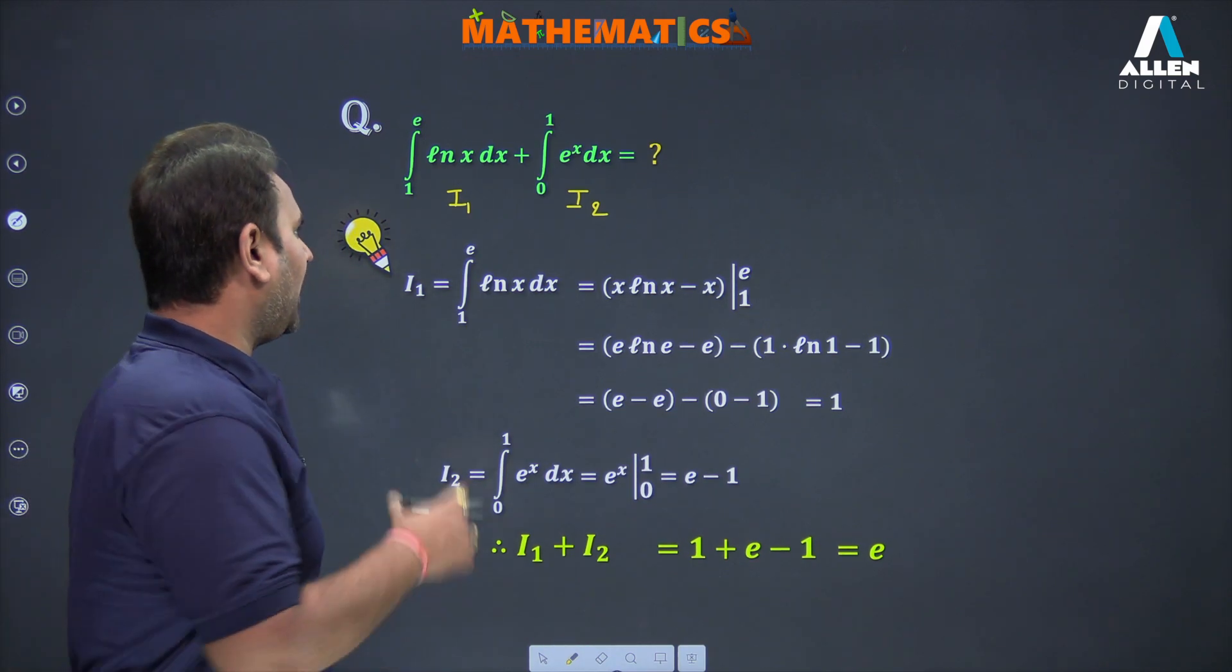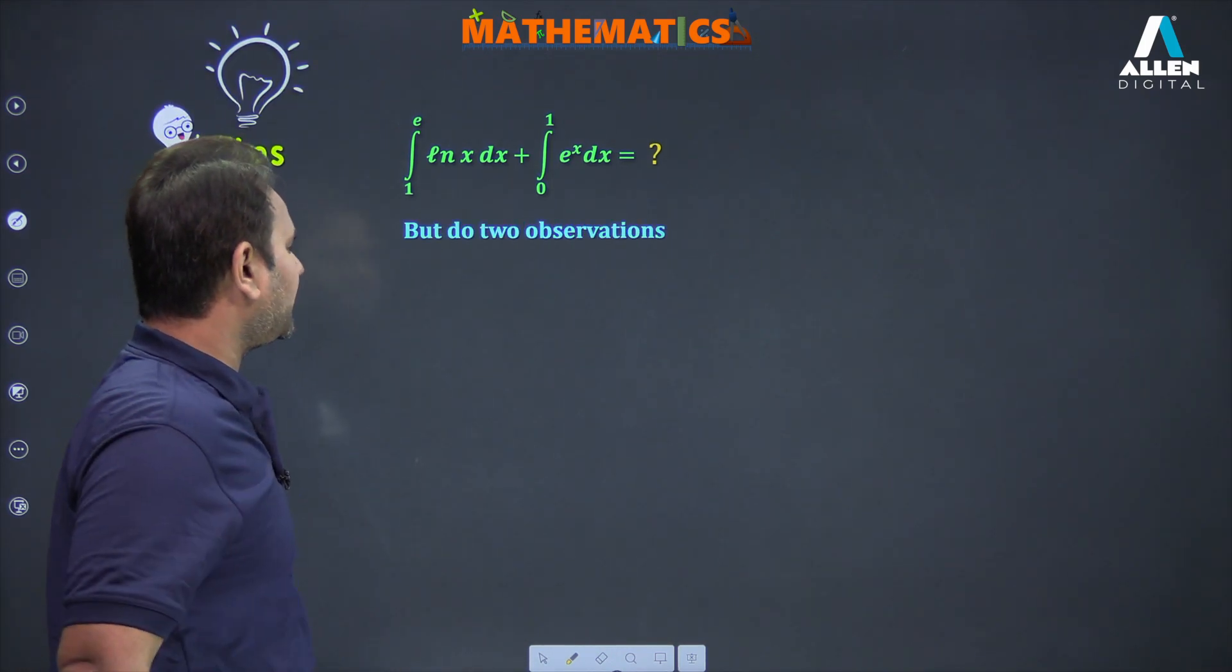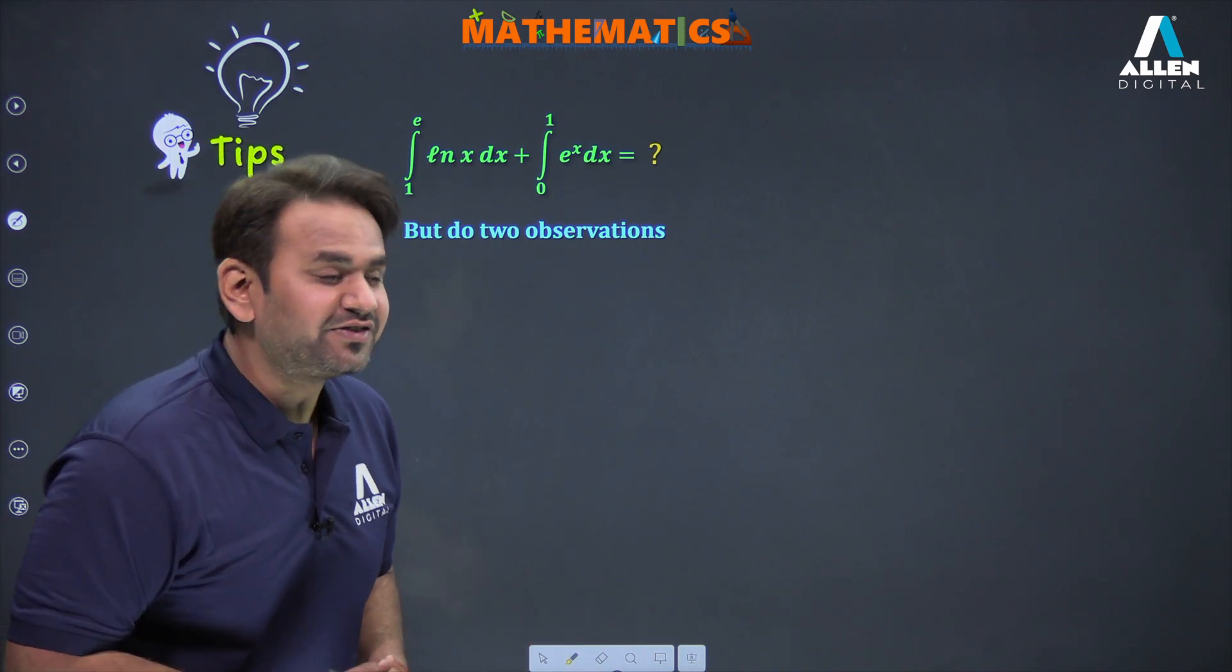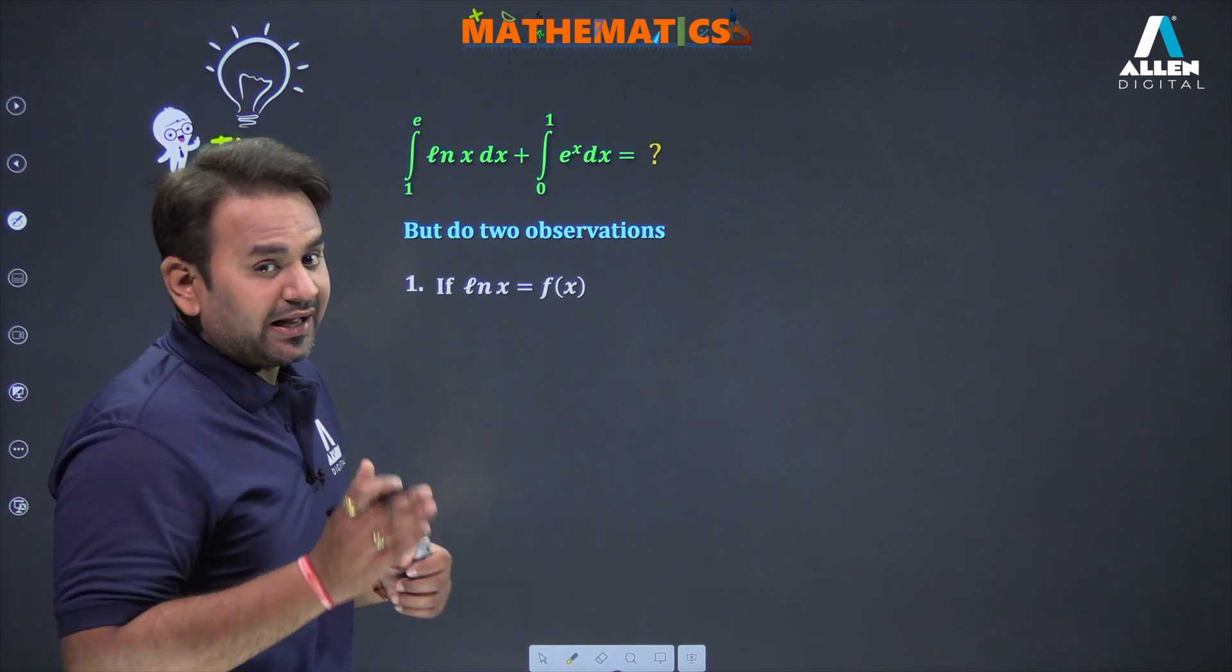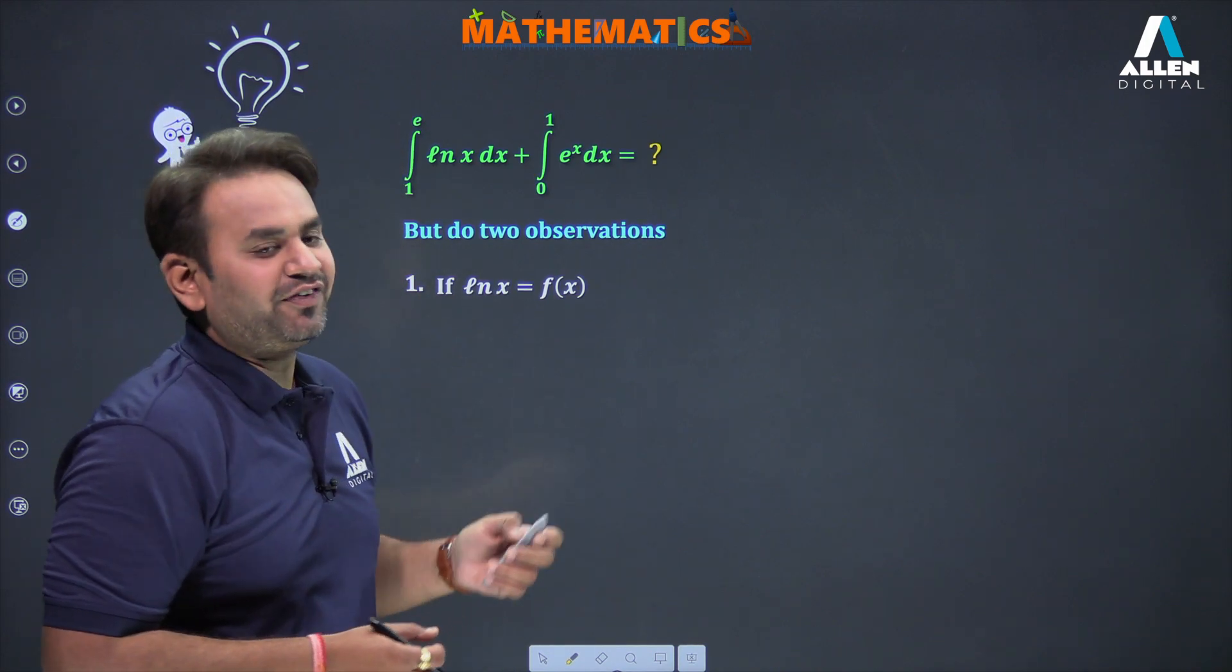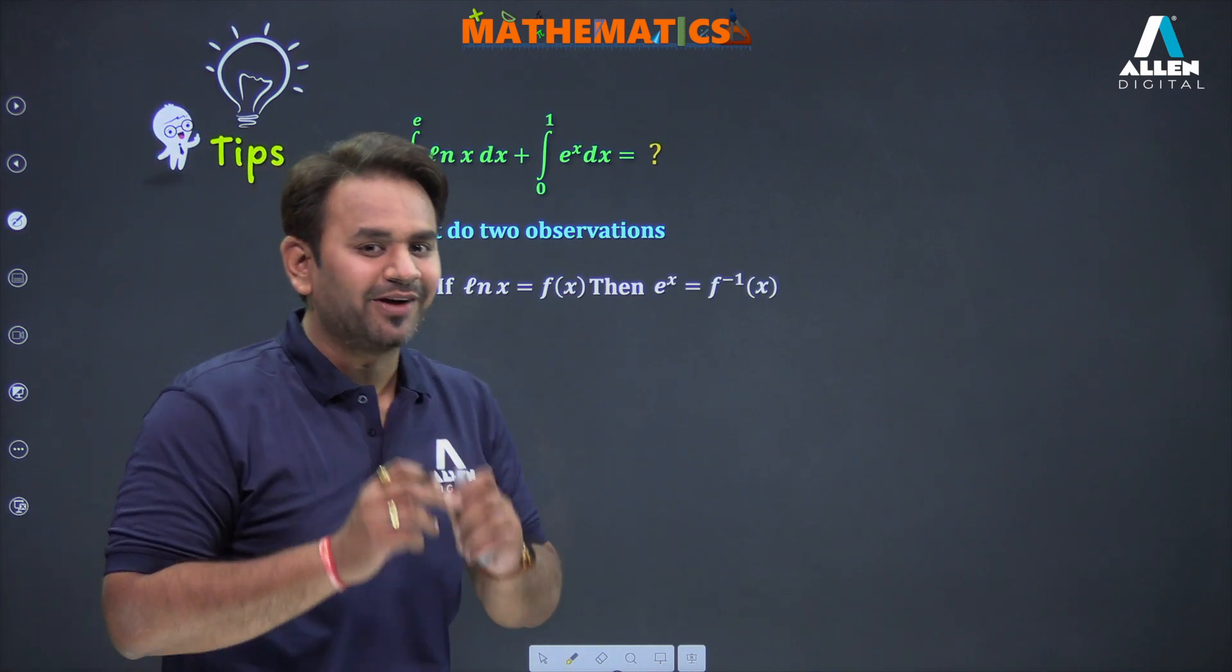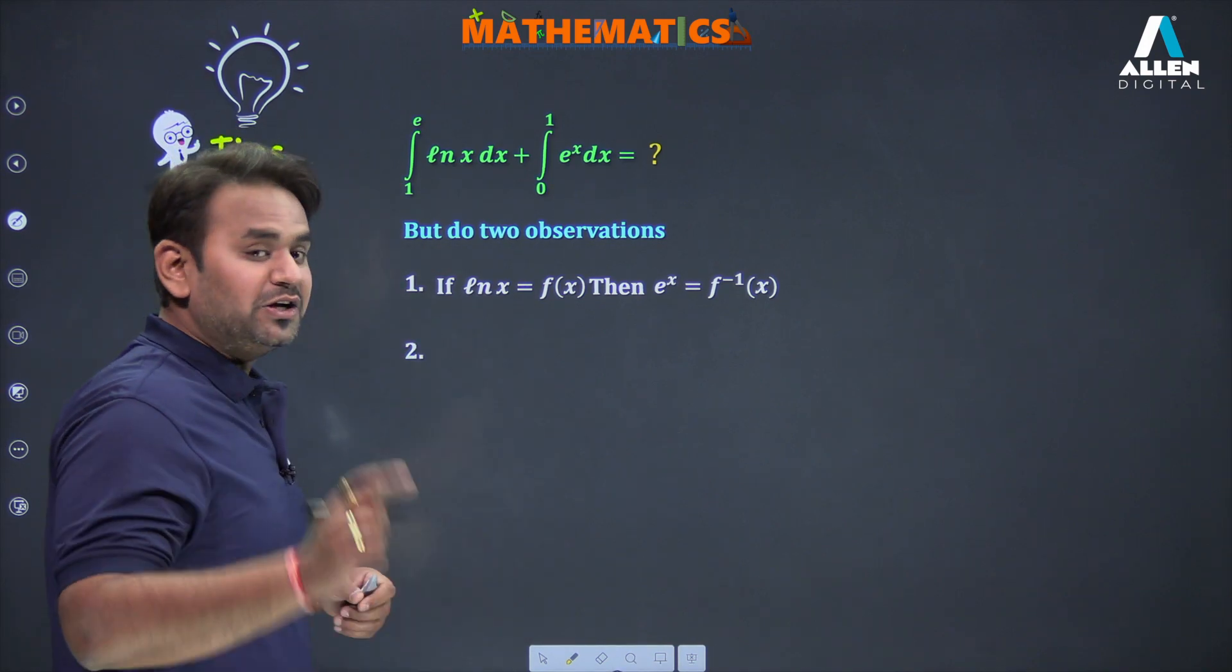Now let me explain the tip. There are two things I'll tell you, listen carefully. The first observation: if ln x is considered as f(x), then as you know how to find inverse, if ln x is f(x) then e^x is f inverse of x. Everyone understands this?